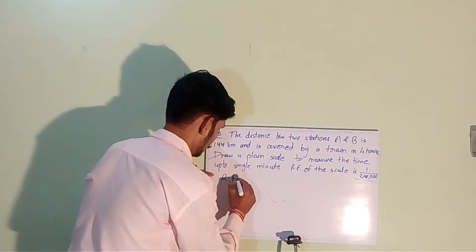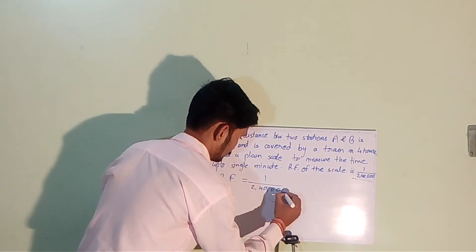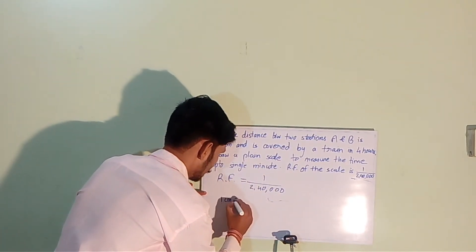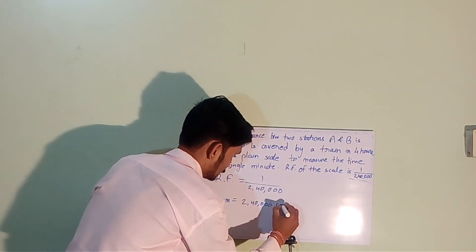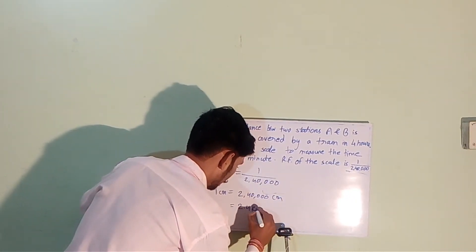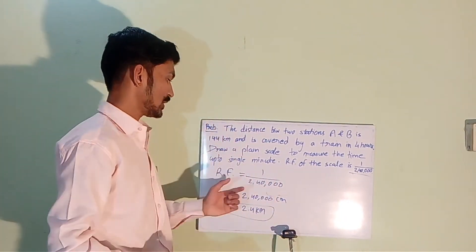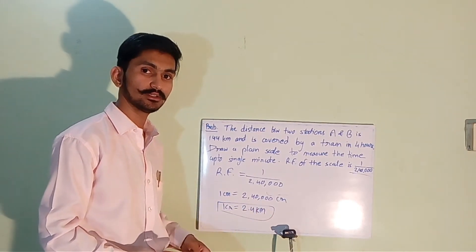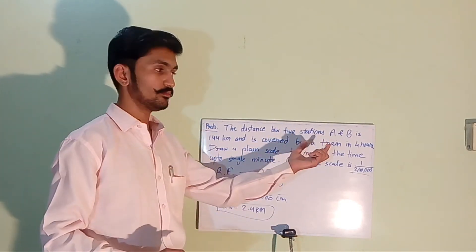The RF is 1 divided by 2,40,000. What does it mean? It means 1 centimeter equals 2,40,000 centimeters, or we can say 2.4 kilometers. This RF simply means 1 centimeter is showing 2.4 kilometers of actual distance. But we need to show it in minutes.